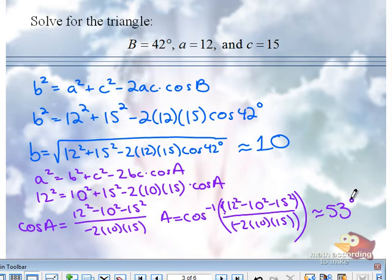So cosine inverse, parenthesis, parenthesis, the entire numerator in your parenthesis, divide by the entire denominator in parenthesis. Since b, side b is 10 and the angle is 42, and side a is 12, then the answer has to be bigger than 42.